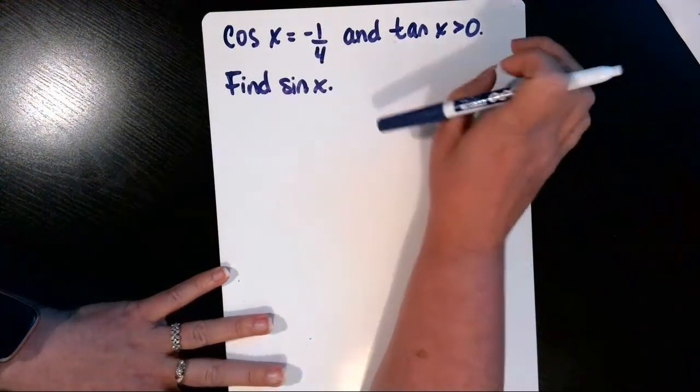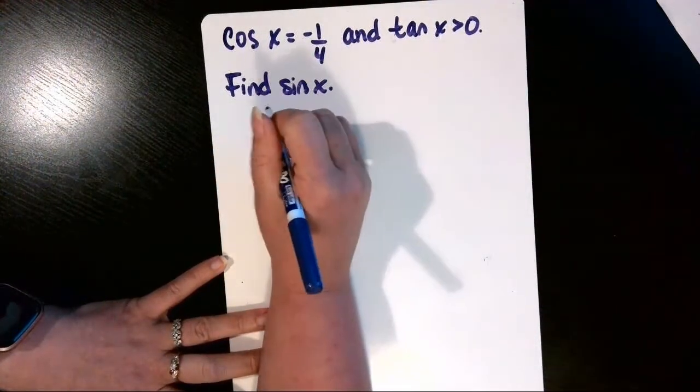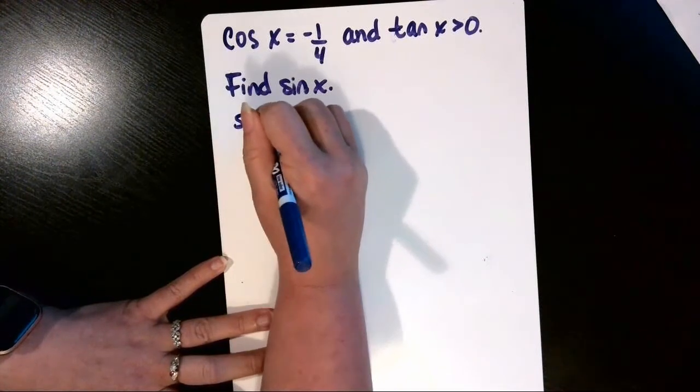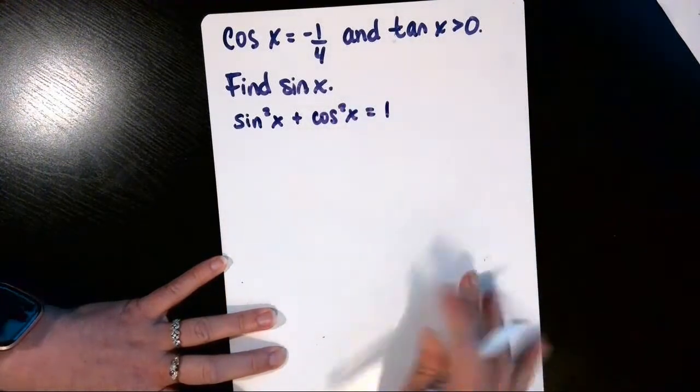So we want to use that information to find the sine of X, and that means the Pythagorean identity. Since the sine squared of X plus the cosine squared of X is equal to 1,